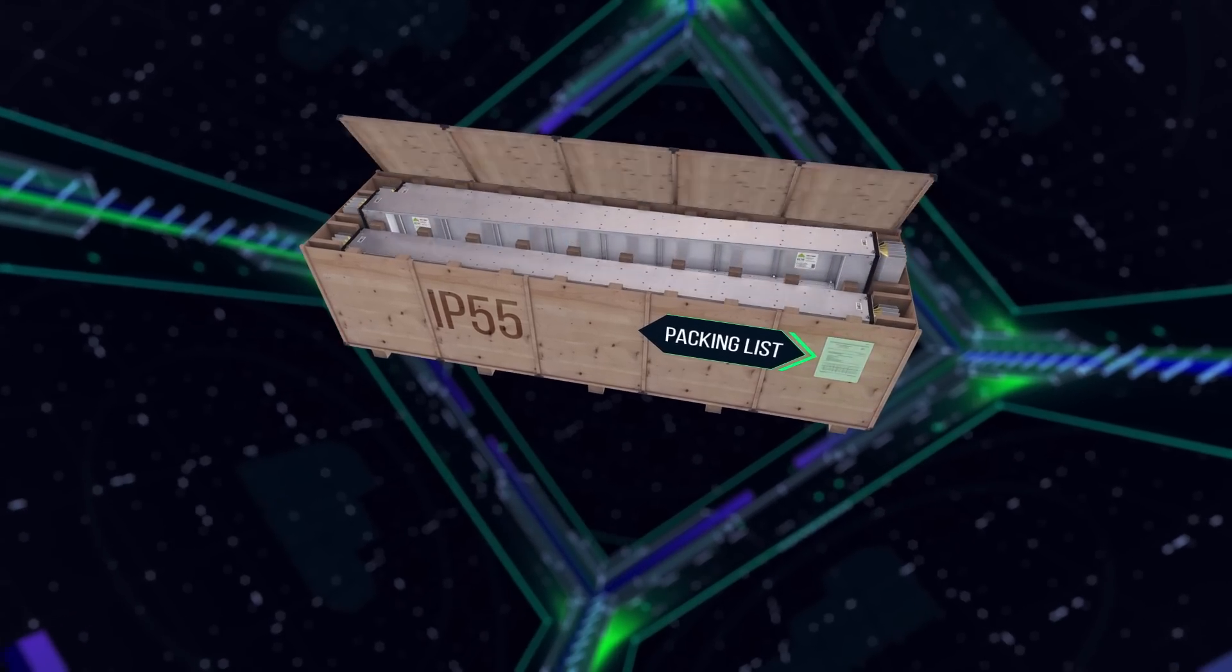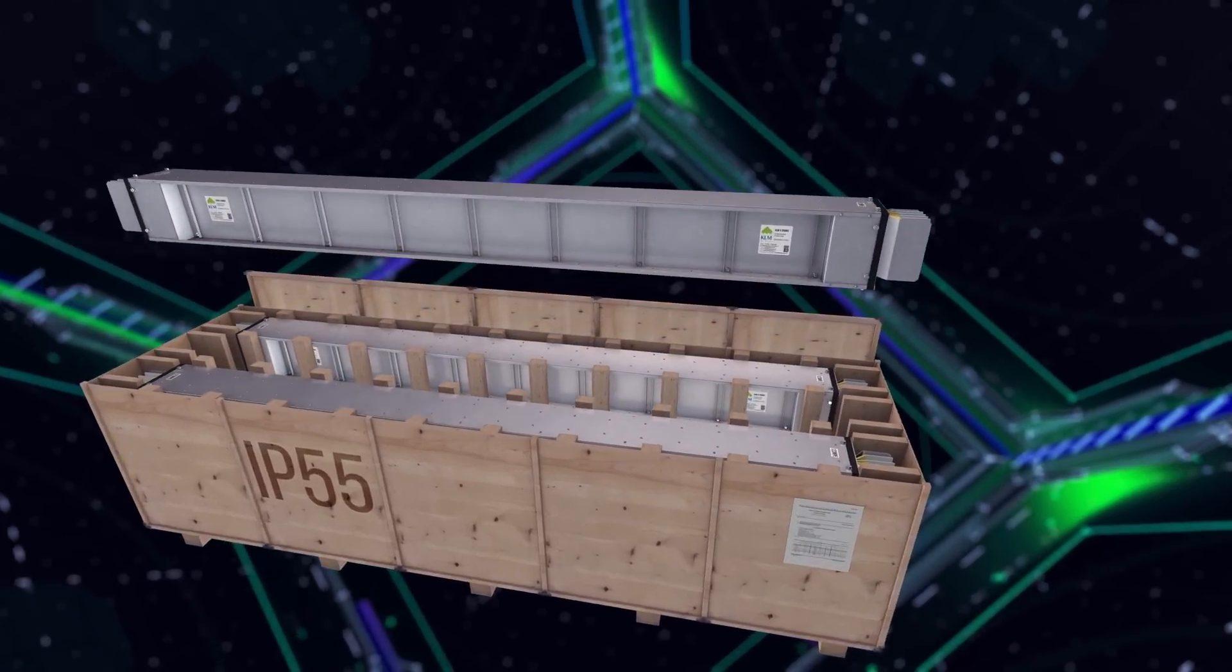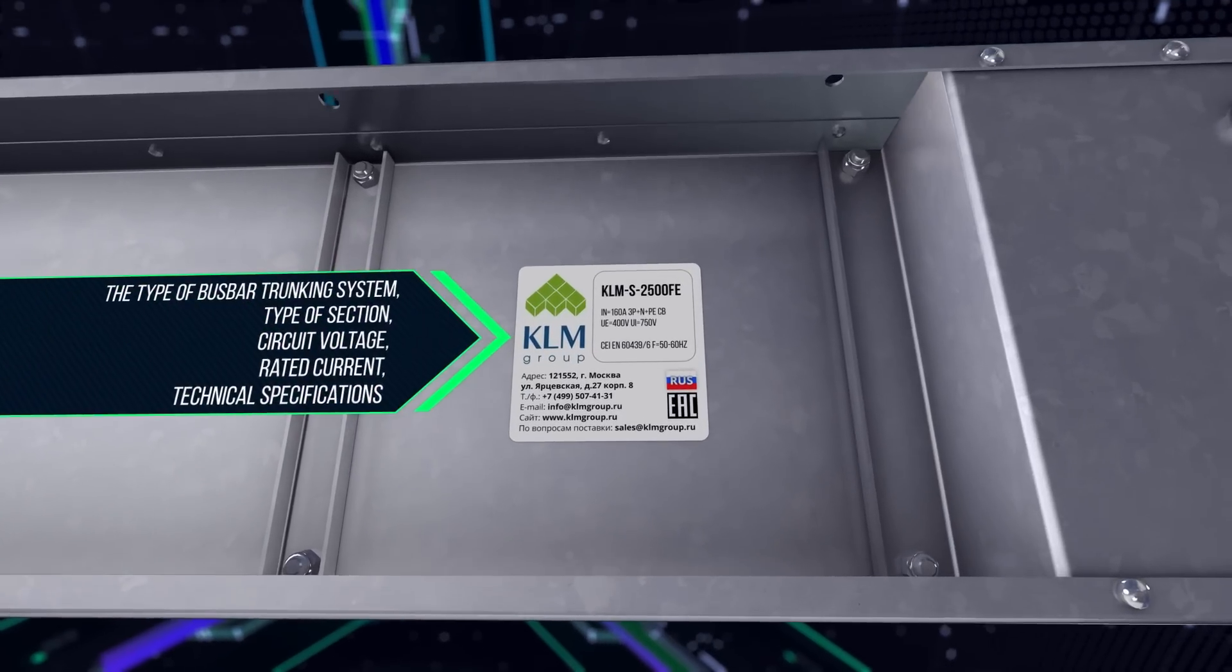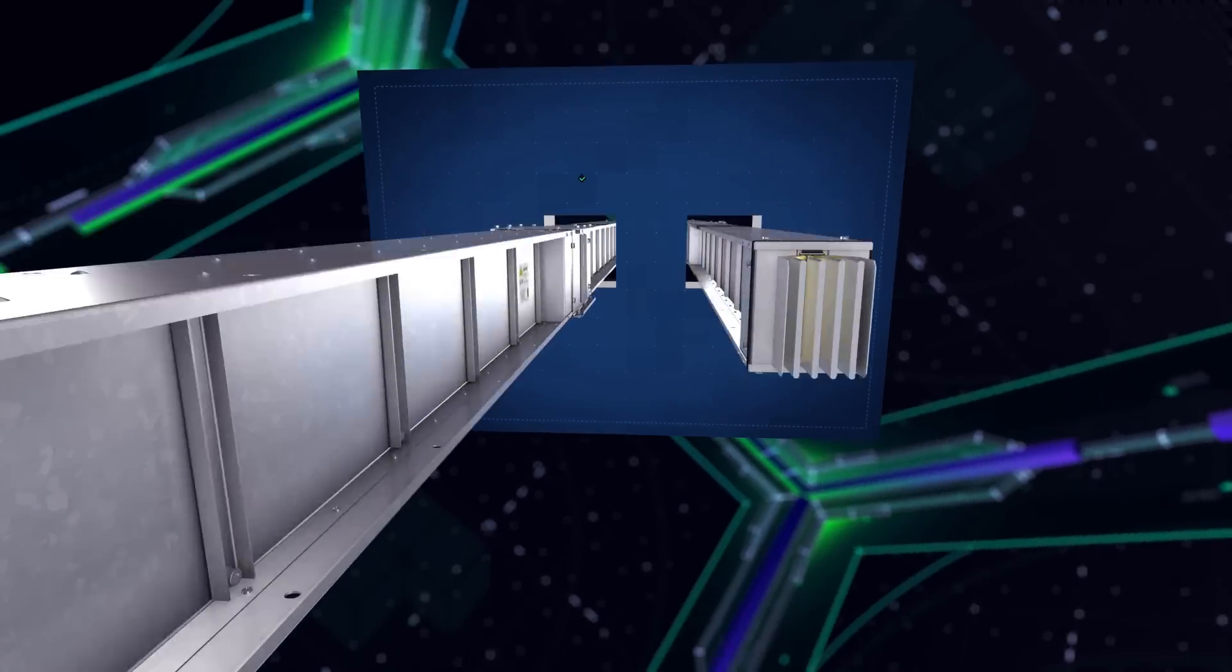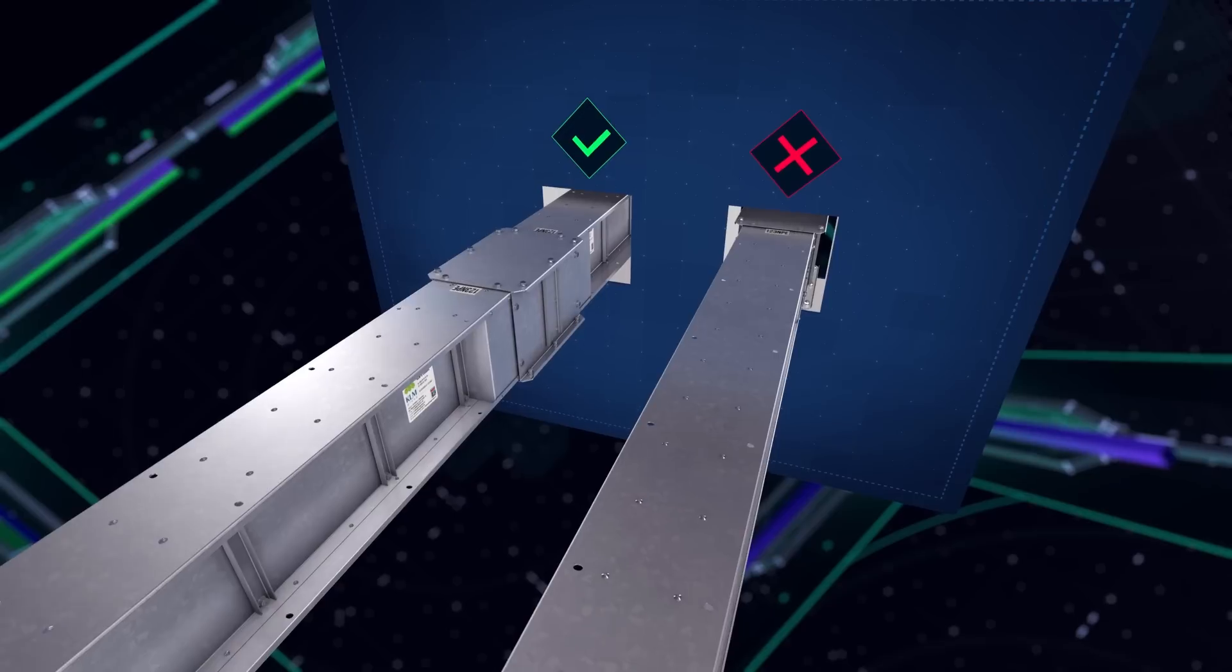The packing lists indicate the items contained inside. Tags on sections indicate the parameters of the bus bar trunking system. The drawing of the bus bar trunking system route and the design of the facility must be studied carefully.